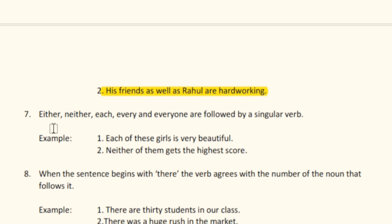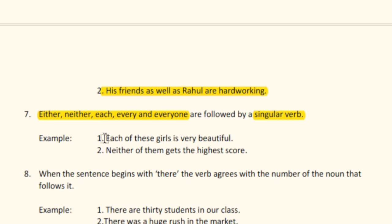Rule number seven: 'either', 'neither', 'each', 'every', and 'everyone' are followed by a singular verb. For example, 'Each of these girls is very beautiful.' Second example: 'Neither of them gets the highest score.'